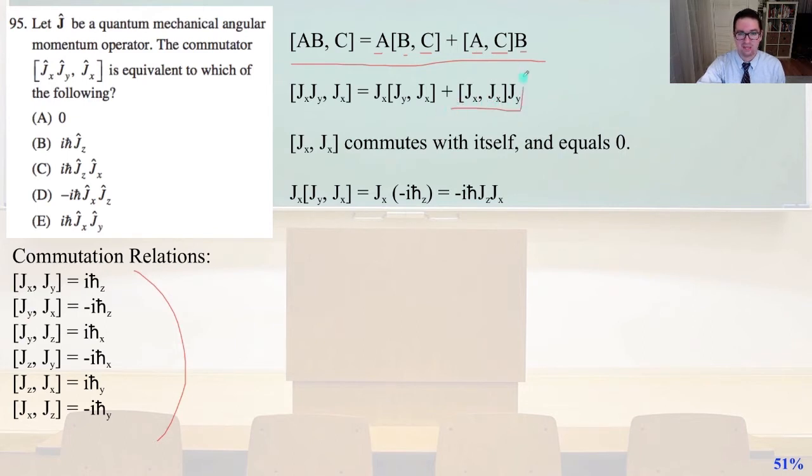And so we know that this commutes with itself, and so it equals 0. So now we're interested in this, where J_x times [J_y, J_x], that's going to equal again J_x. And what is [J_y, J_x] equal over here with our commutation relations? [J_y, J_x] equals minus iℏJ_z. So ℏz is going to equal J hat in the z direction. So minus iℏJ_z, J_x, and that is going to equal answer D.